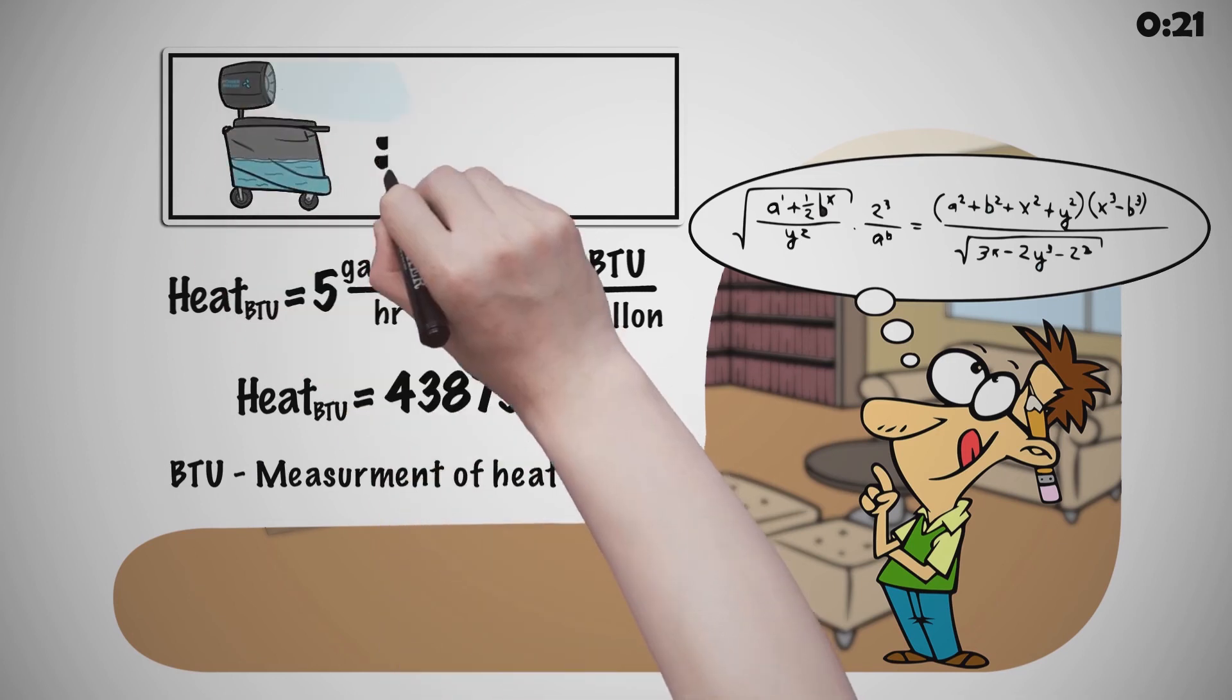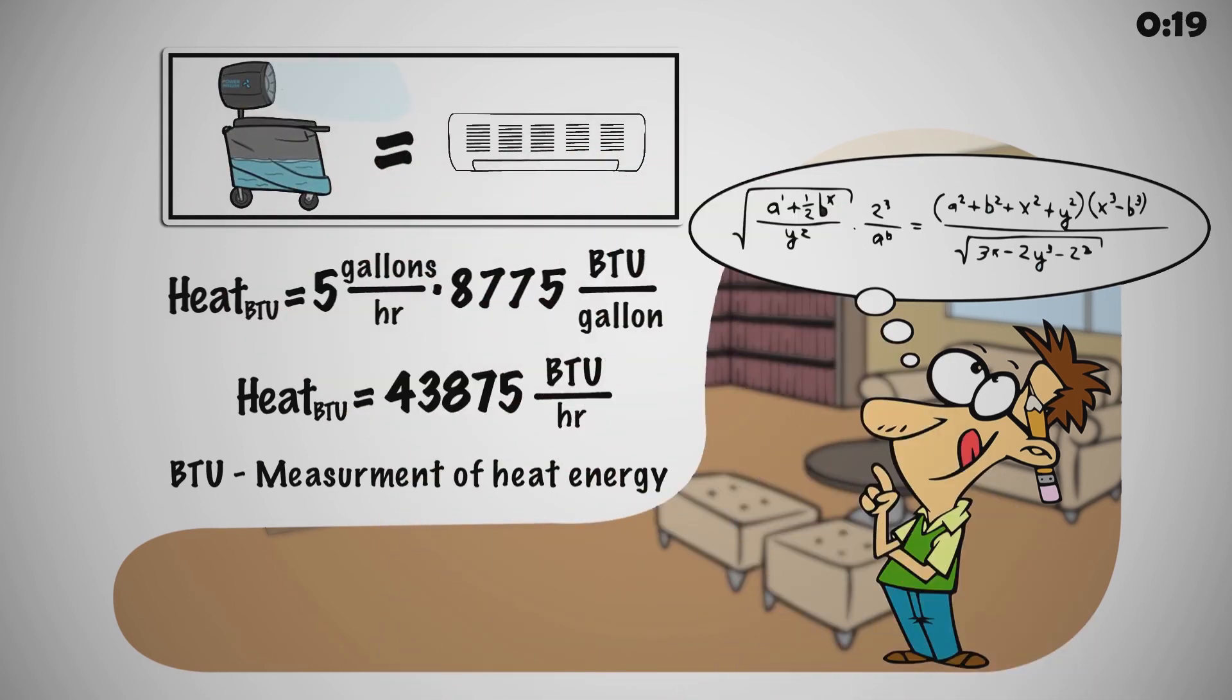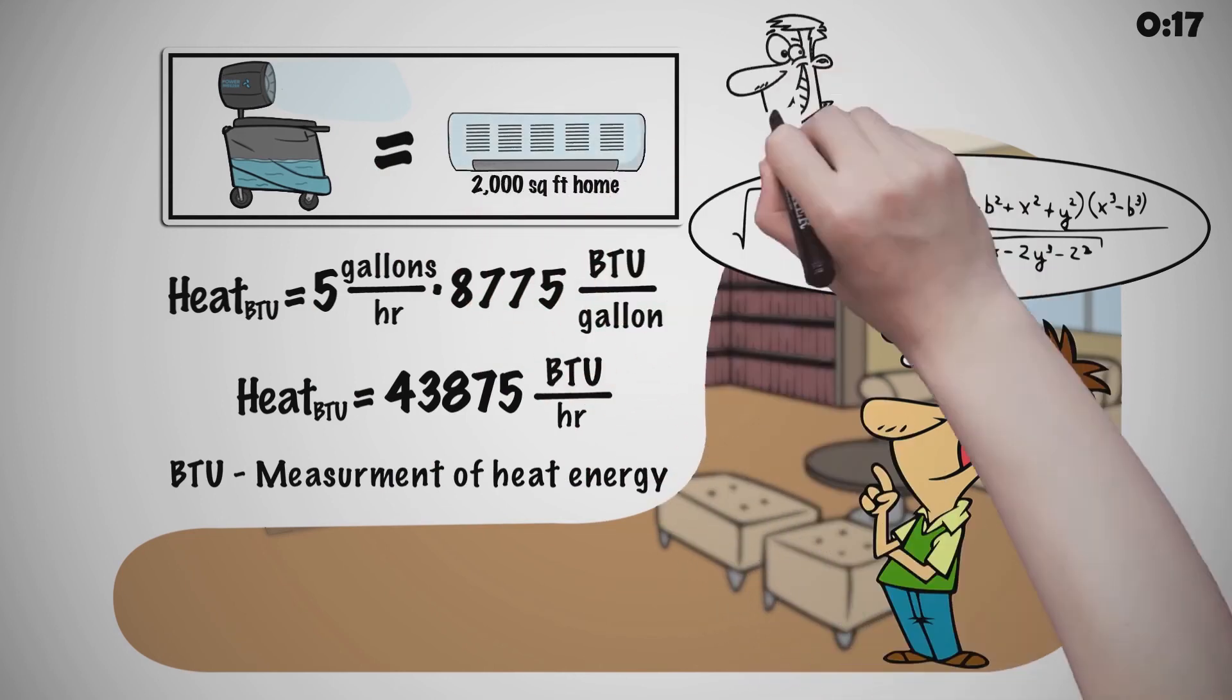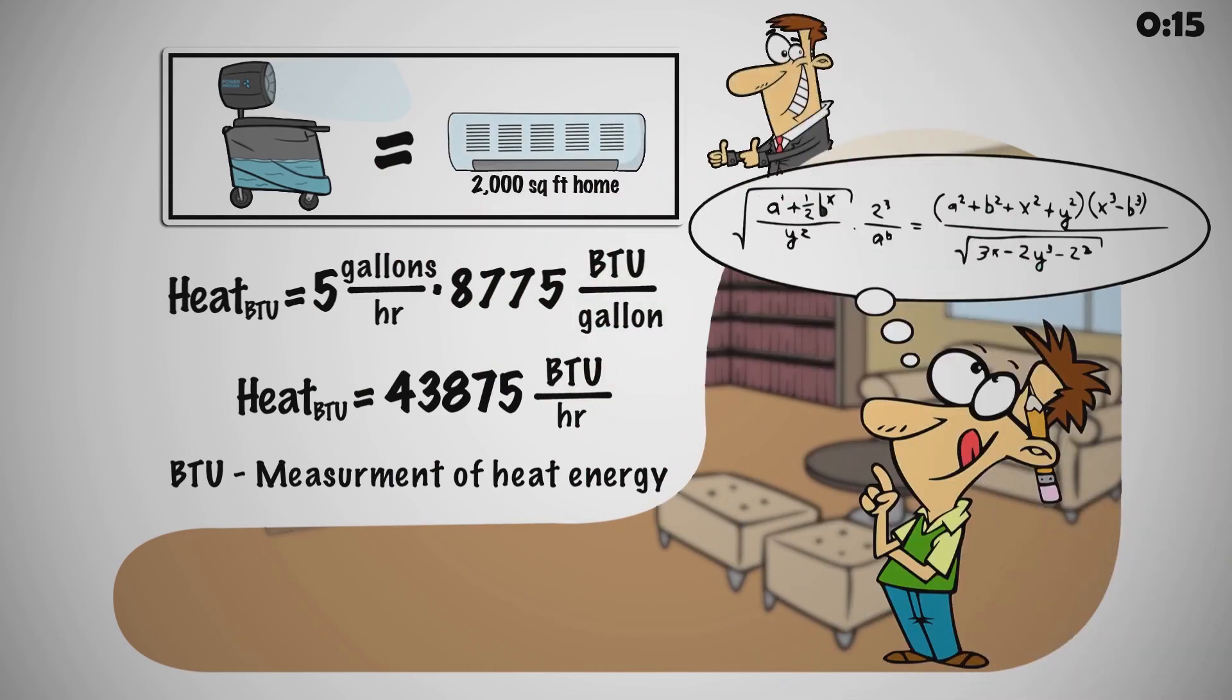How much are 43,875 BTUs? This is equivalent of a typical AC unit required to cool a 2,000-square-foot home.